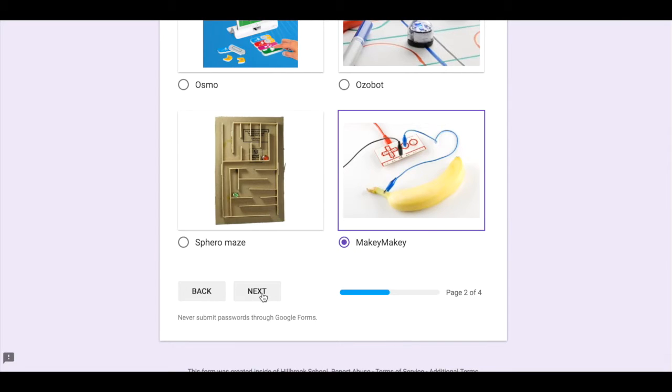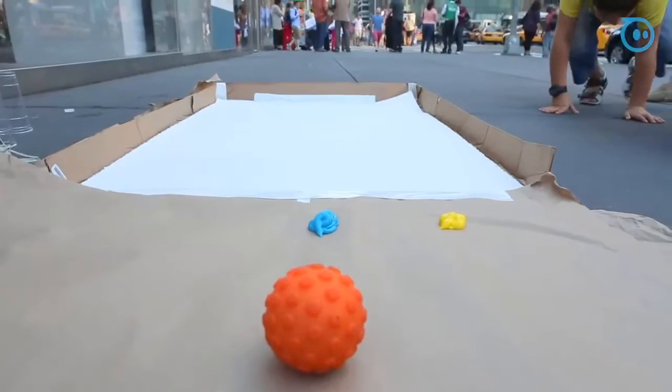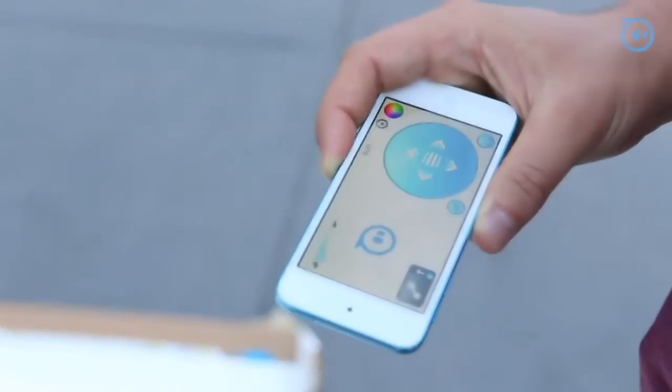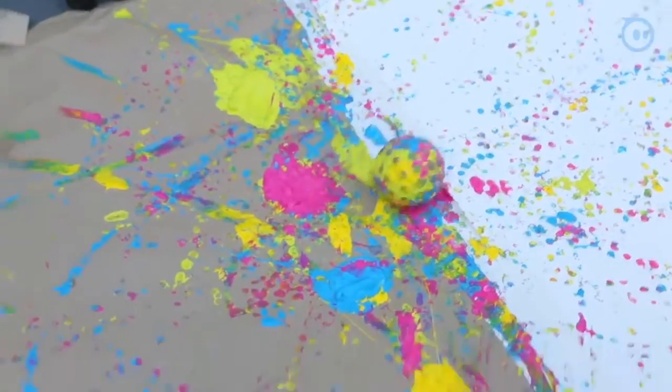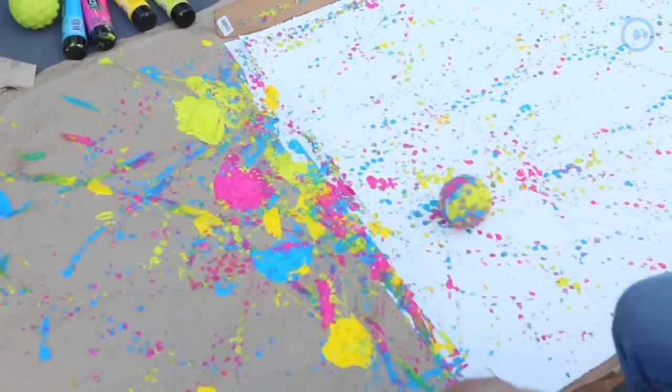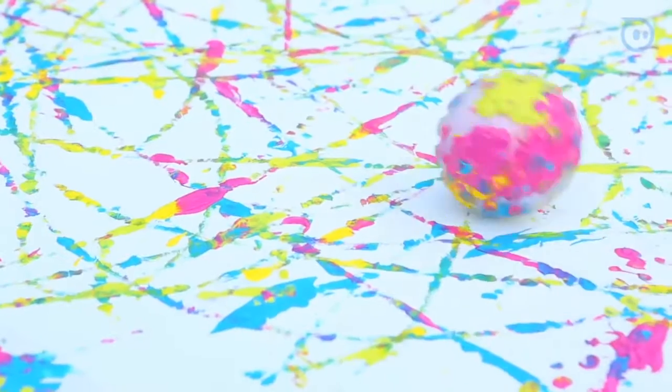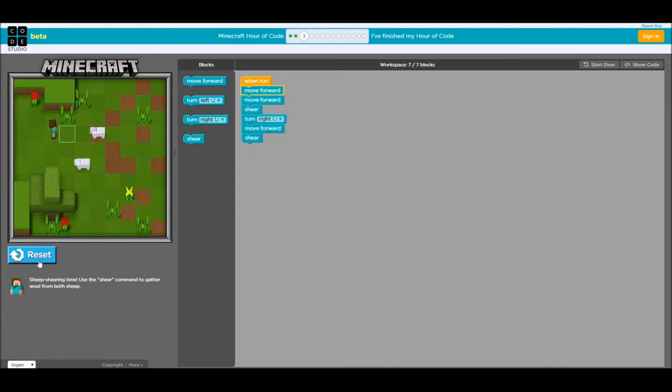The first one is Sphero Art. With this, you are going to create your own piece of abstract art using a Sphero robot, or you're going to use code to tell the Sphero where to go. The next choice is Minecraft Designer. With this, you need to actually build the world of Minecraft in code. It's super cool.